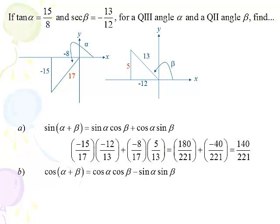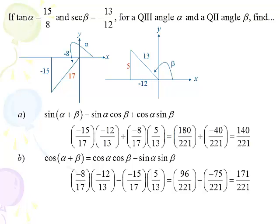Moving on, we're going to do the cosine of alpha plus beta. From the formula sheet: cosine alpha cosine beta minus sine alpha sine beta. The cosine of alpha is negative 8 seventeenths, the cosine of beta is negative 12 thirteenths, minus sine of alpha which is negative 15 seventeenths, times sine of beta which is 5 thirteenths. After multiplication and subtraction, we get 171 over 221 for the cosine of alpha plus beta.